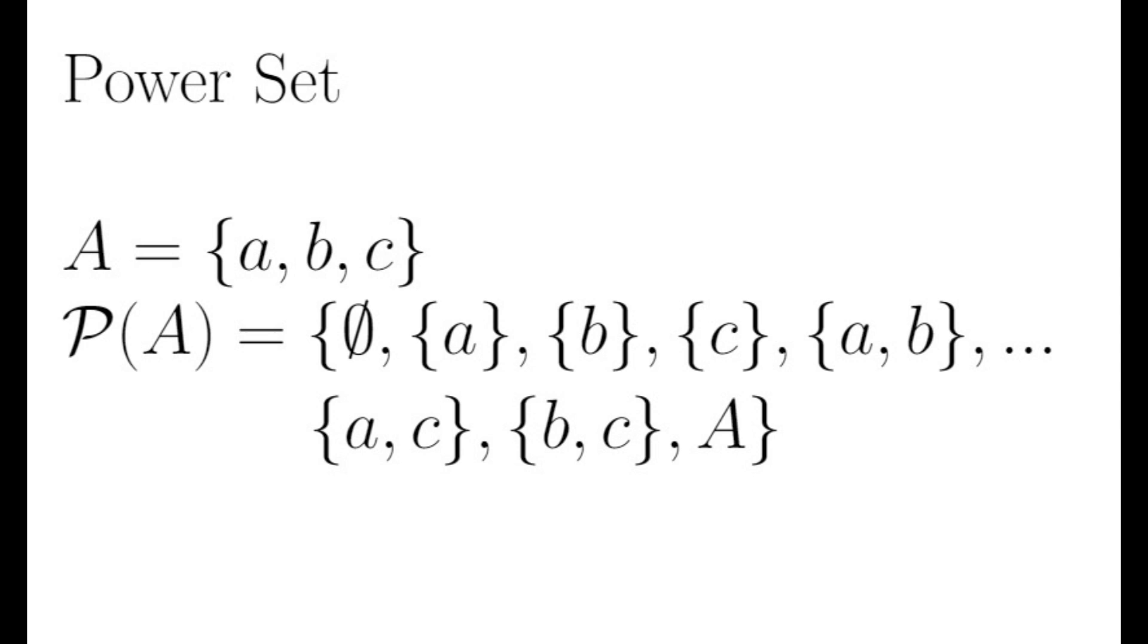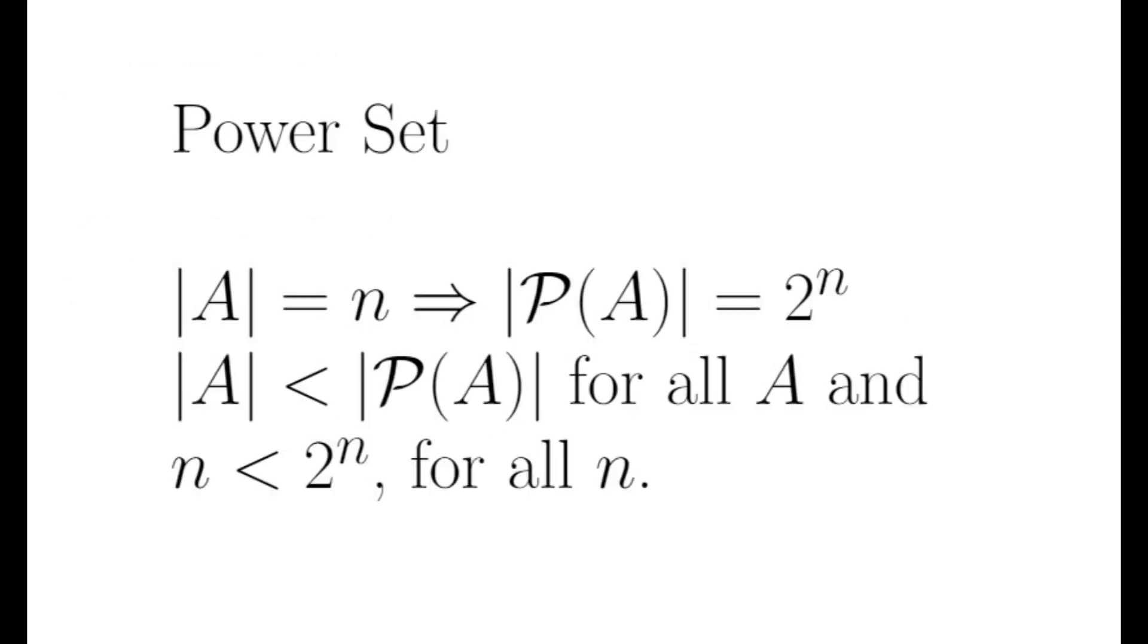Notice that A has three elements, and its power set has eight elements, which is two to the third power. In fact, given any set with cardinality n, its power set will have two to the nth power elements, and will be strictly larger.